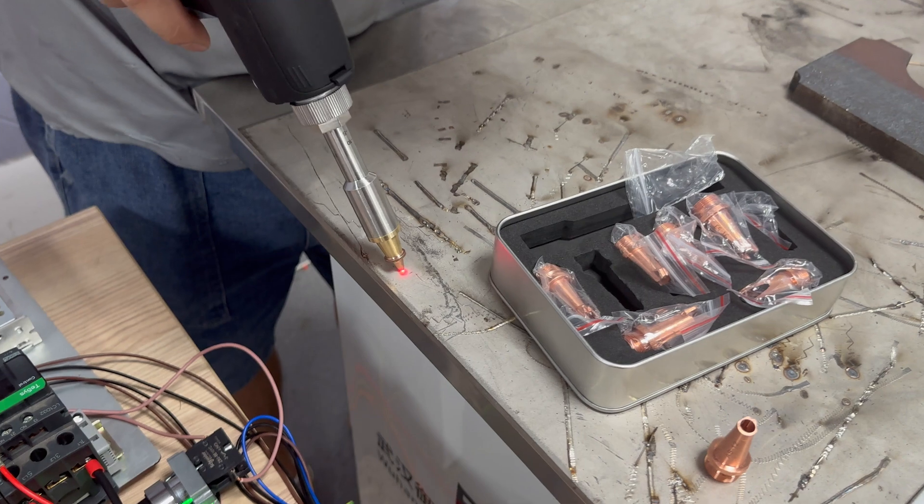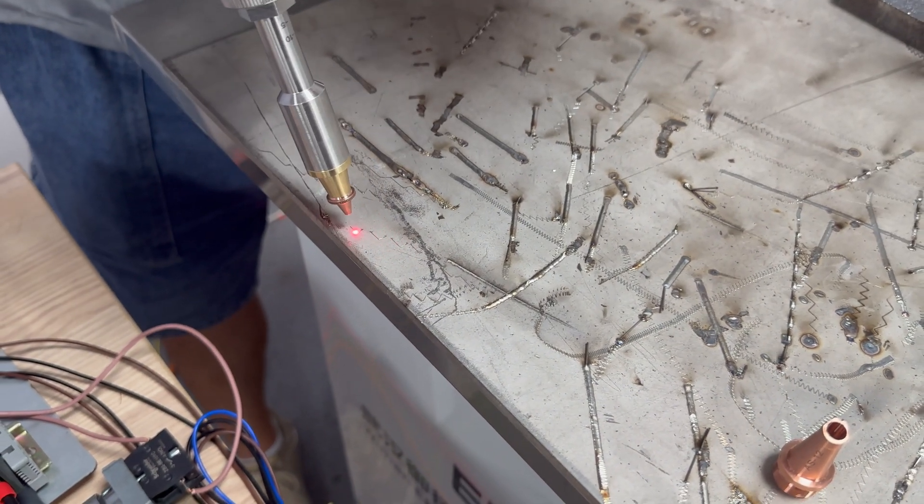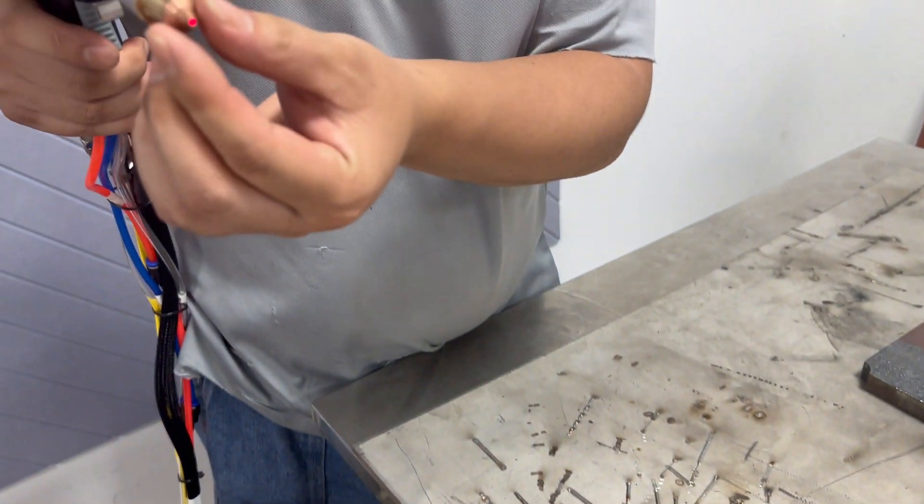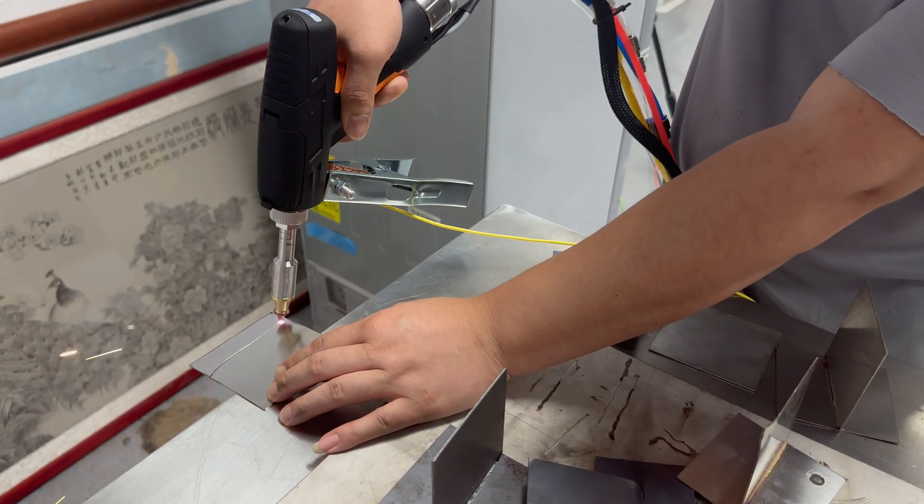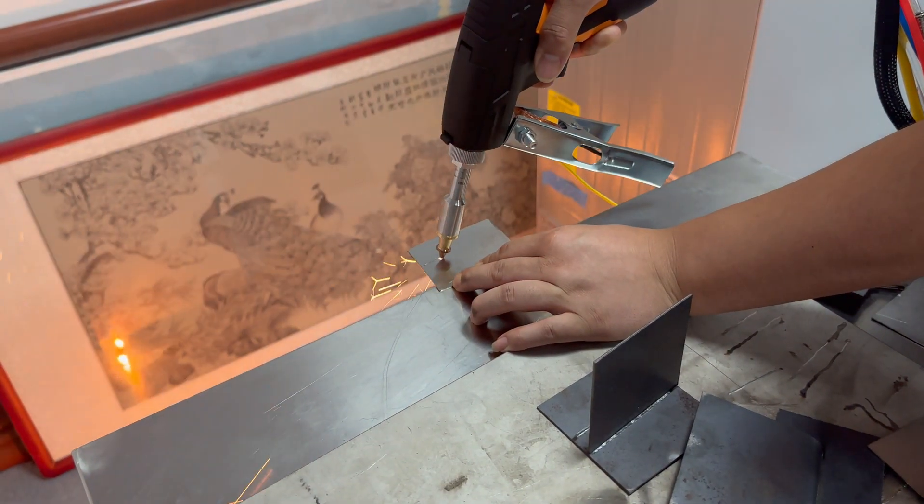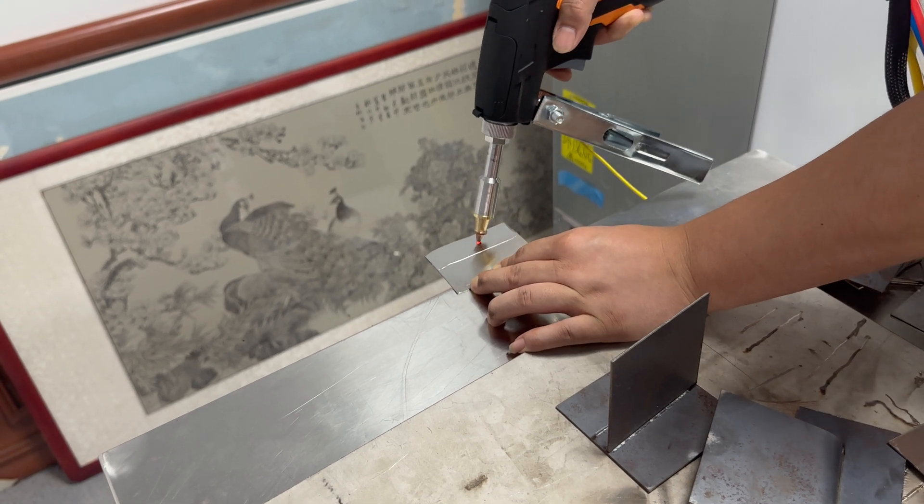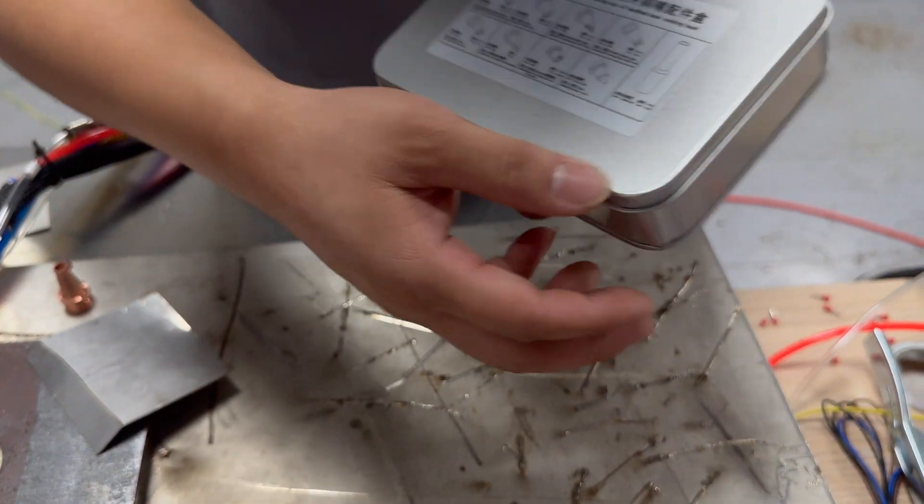Now we see the red dot. It used to be a line, now it becomes a point. This point must come out completely from the center of the nozzle. Now we can cut.